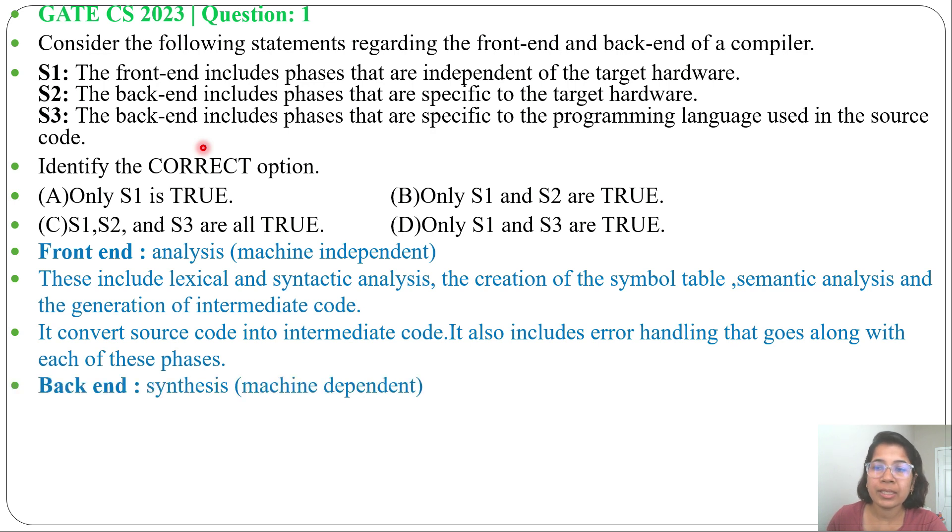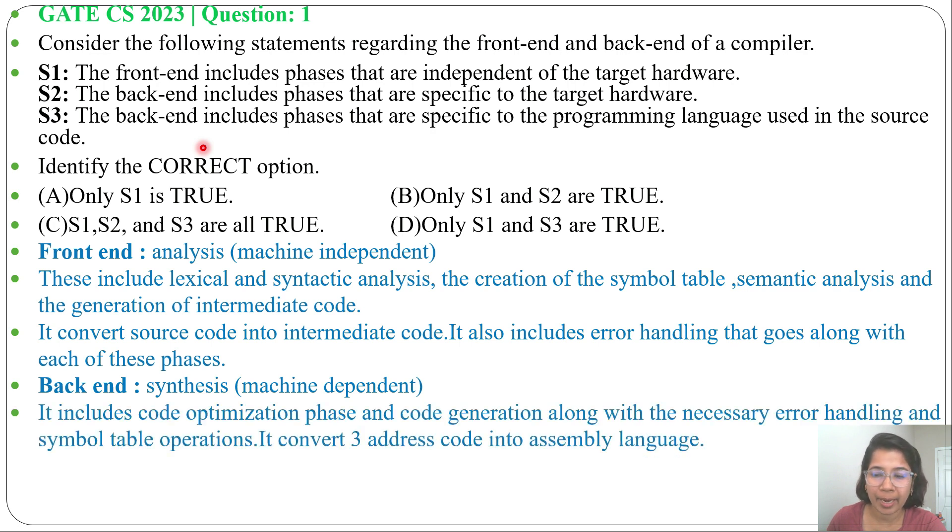Whereas, back-end calls synthesize its machine-dependent. Front-end is machine-independent. Whereas, back-end is machine-dependent. Intermediate code optimization, target code generation, and target code optimization comes under back-end.